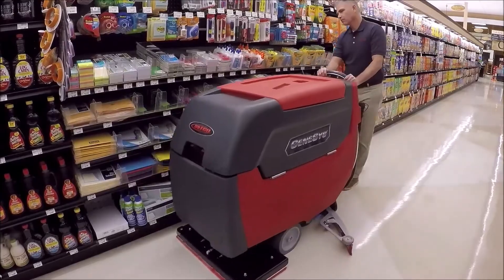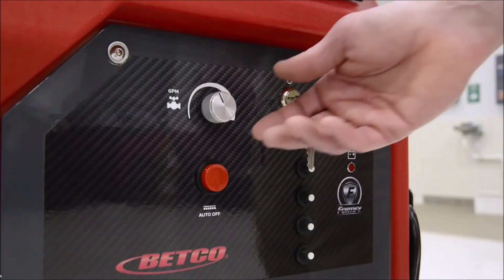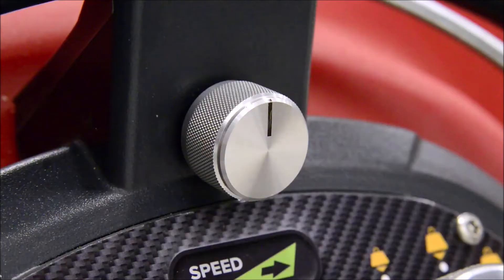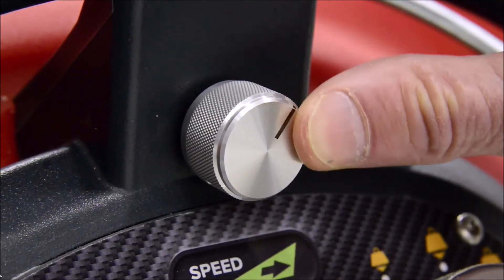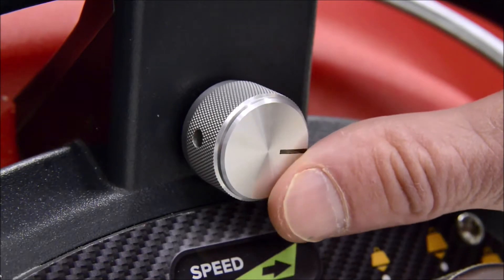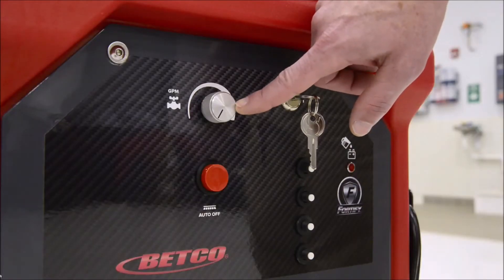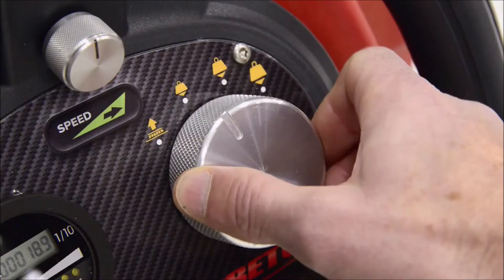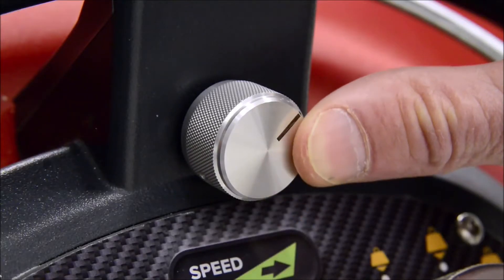Typically, the logic is pretty simple. With relatively clean floors, the machine can be set to a lower solution flow rate and down pressure, while your speed can be moderate to high, depending on safety and comfort level. With dirtier floors or tougher project work, however, the machine should be set to a higher solution flow rate and down pressure, while your speed should be moderate.